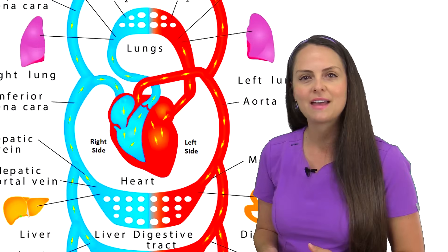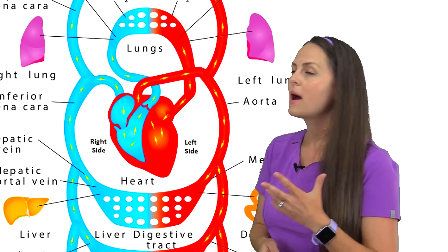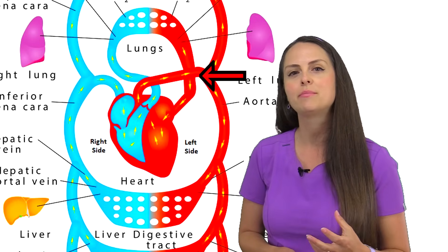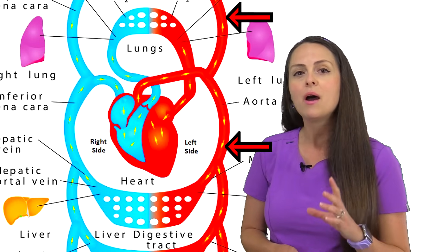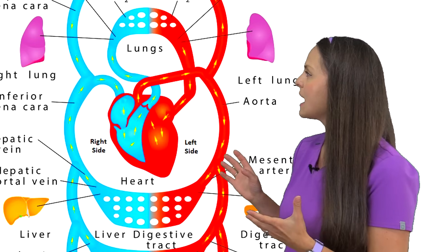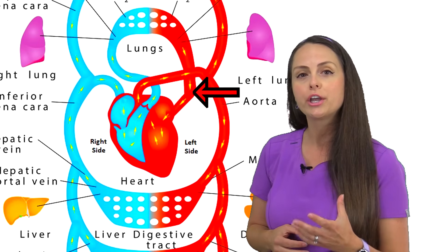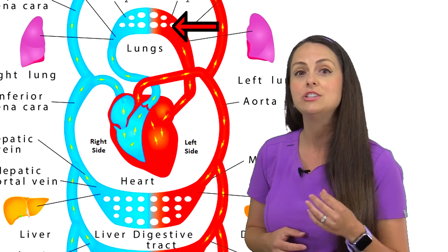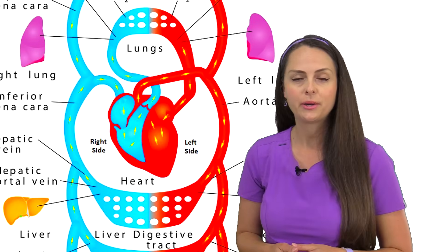Now let's talk about left sided heart failure. So the left side of your heart, its goal is to pump blood into arterial circulation because it has fresh oxygenated blood it just received from the lungs, and it wants to get it out to your body. But with left sided heart failure, what happens is that heart is too weak on this side and blood starts to back up on this left side. And where it goes is into the lungs, so the pulmonary circulation gets congested. And this is actually the most common type of heart failure.